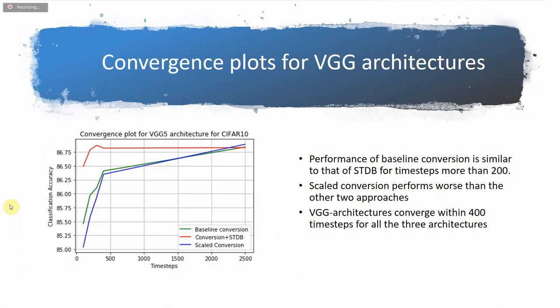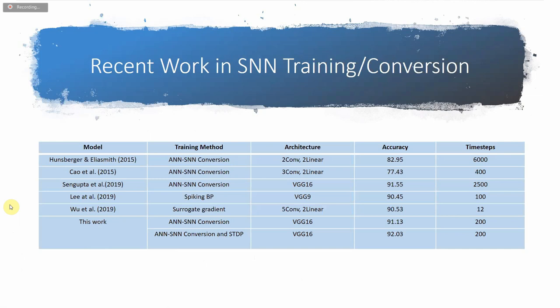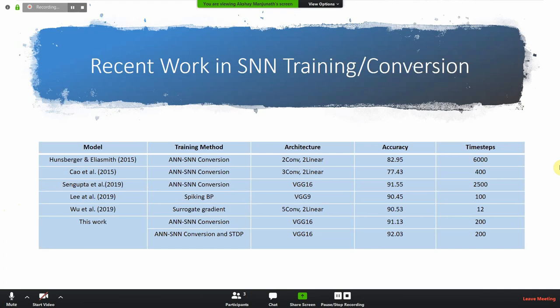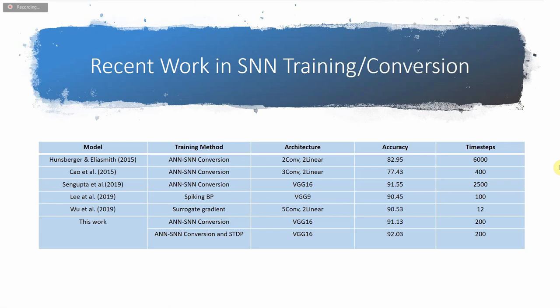This slide shows some recent works in the space of SNN training and conversion. The last three works — Sengupta, Li, and Wu — have used various kinds of conversion or backpropagation from scratch. For deeper architectures we achieve near state-of-the-art accuracy, around one to two percent less than traditional ANN architectures. Sengupta et al. required a high number of time steps, and the main motivation of this work is to show that even with fewer time steps and appropriate conversion techniques, we can yield state-of-the-art accuracy.